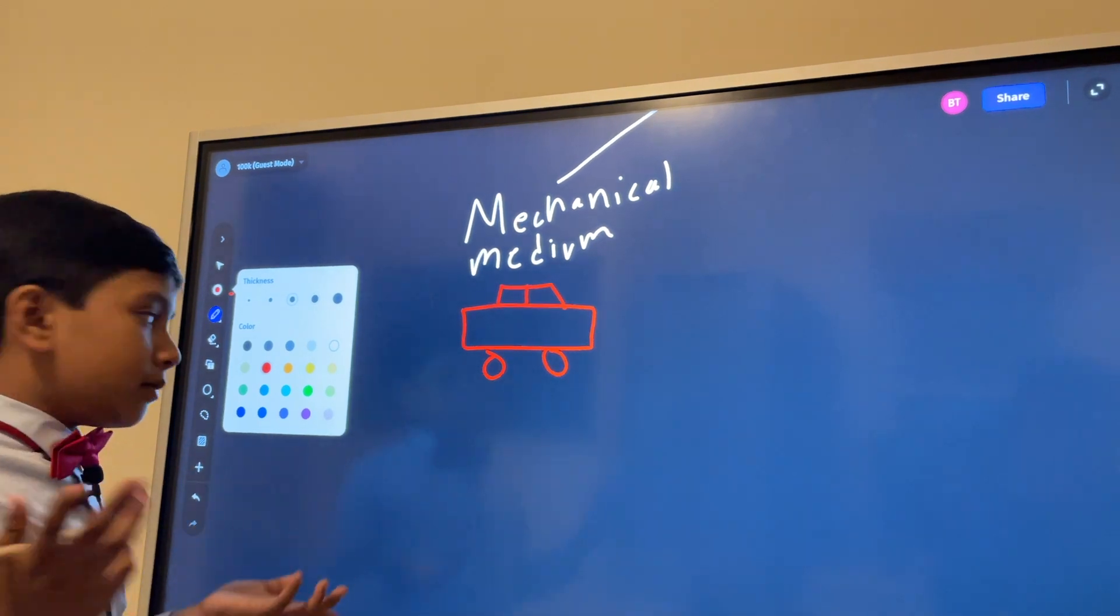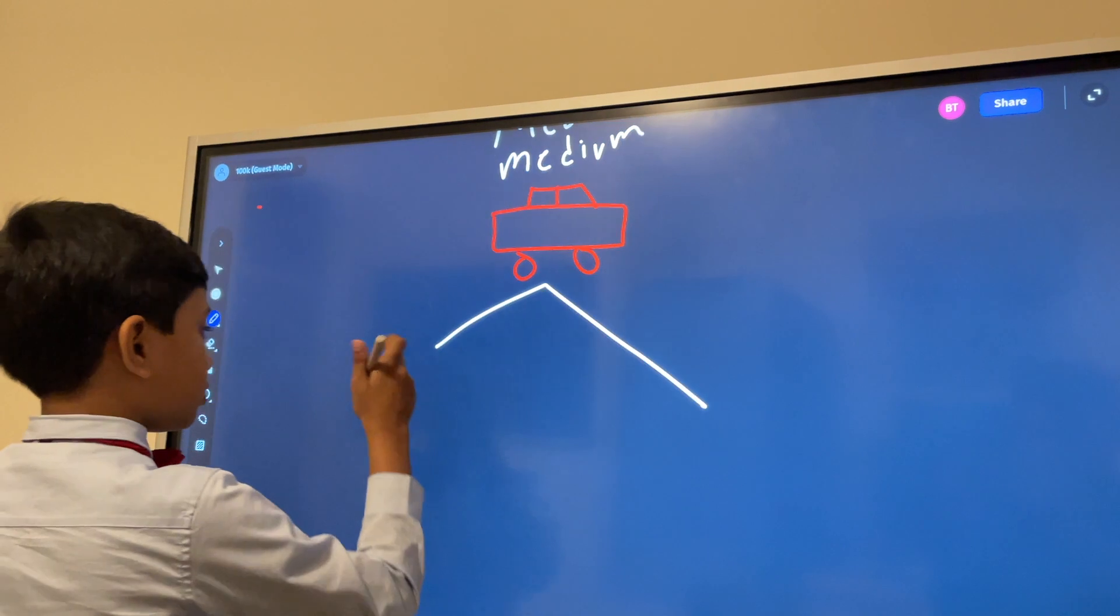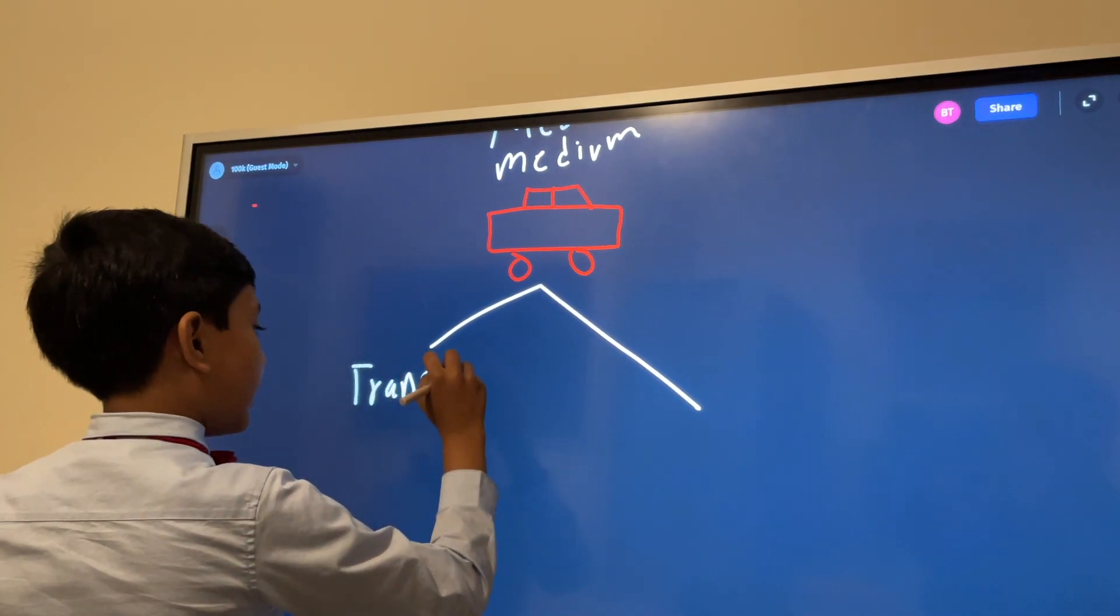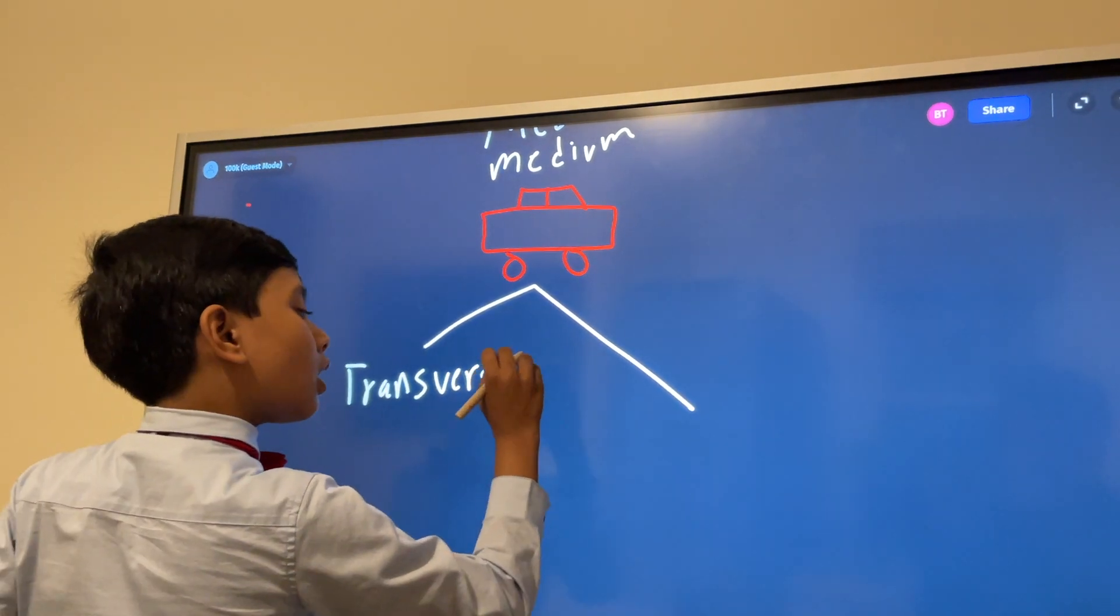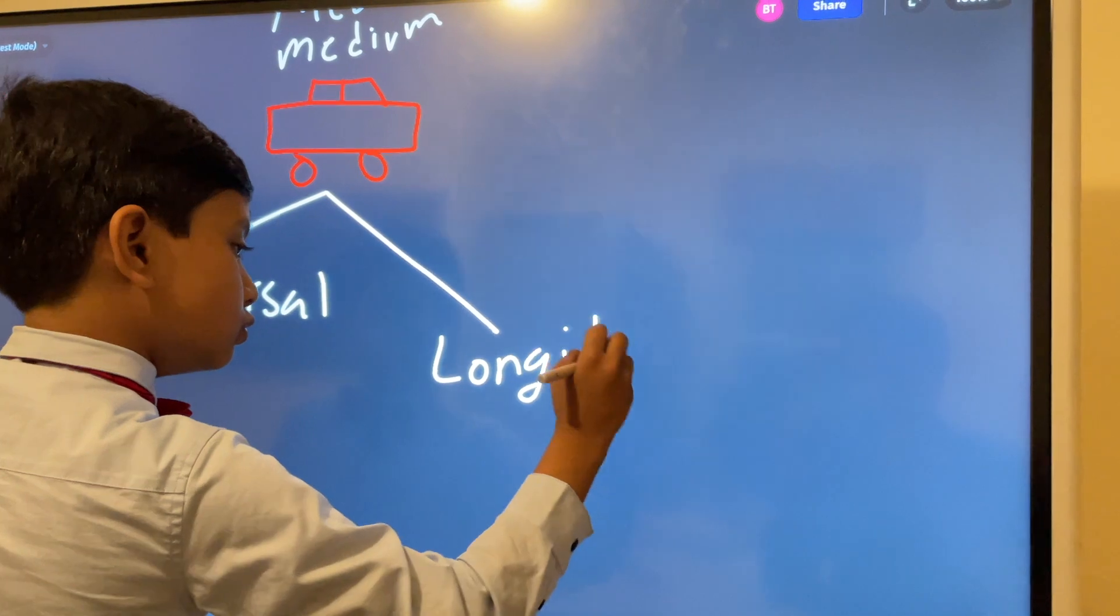Now mechanical waves have two types: transversal and longitudinal.